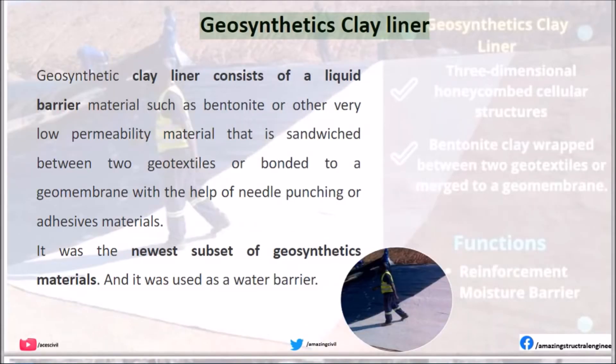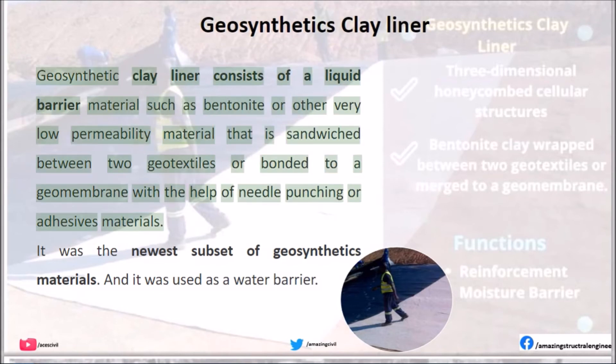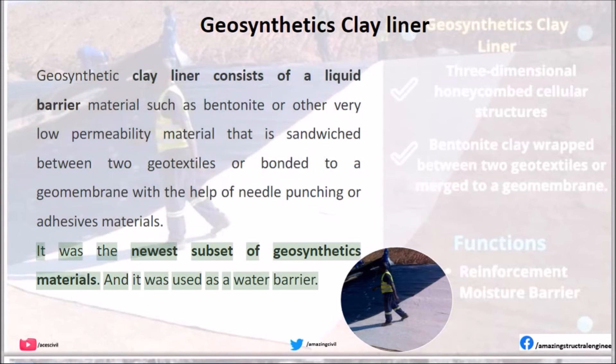Geosynthetic Clay Liner: Geosynthetic clay liner consists of a liquid barrier material such as bentonite or other very low permeability material that is sandwiched between two geotextiles or bonded to a geomembrane with the help of needle punching or adhesives. It is the newest subset of geosynthetics materials, and it is used as a water barrier.